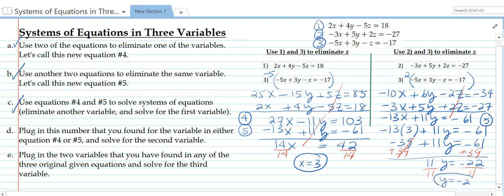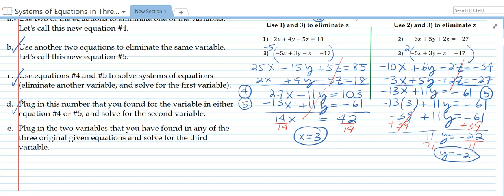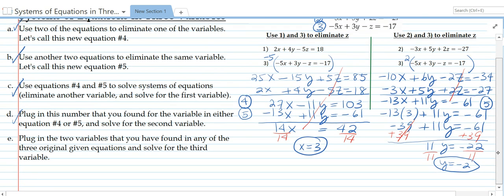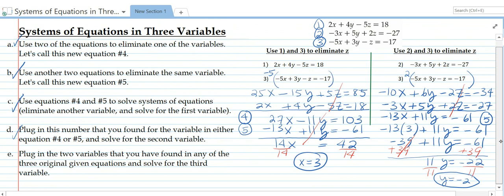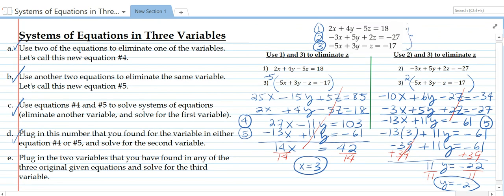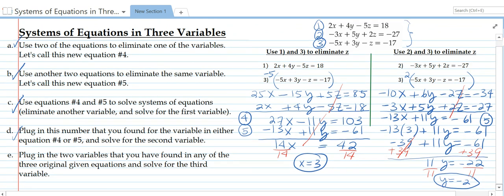We're almost done. We found our second variable. We just have one more variable to solve for. And we do that by plugging in the x and the y that we found into any of the three original equations. So we could plug it into any of these three. It's up to you. So I'm going to plug it into the first one. I plug in 3 for x and negative 2 for y and we're going to solve for z. Notice the first one that we eliminated is the last one that we solved for.